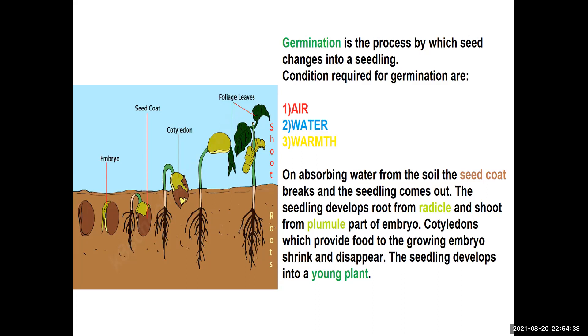The cotyledons, which provide food to the growing embryo, shrink and disappear. The seedling develops into a young plant.